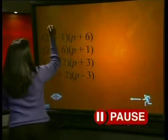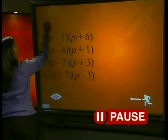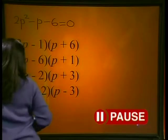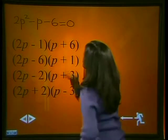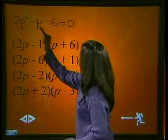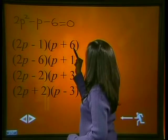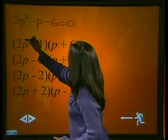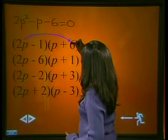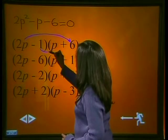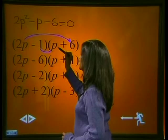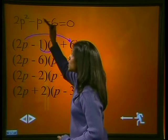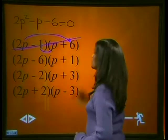Remember our original equation was 2p² - p - 6 = 0. Now to test: 2p × p gives me 2p². -1 × 6 gives me -6. Now let's check the middle term. 2p × 6 gives me 12p. -1 × p gives me -1p. So 12p - 1p gives me 11p which is not the middle term. So this equation is wrong.